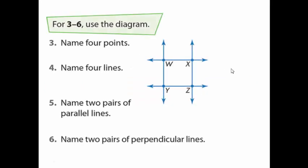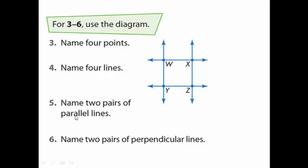Now let's start to answer examples about these lines. We have a diagram where each part is given a letter. We have W, X, Y, and Z. We have several questions: the first question asks us to give four points, and the second asks us to give four lines, two parallel lines, and two perpendicular lines.